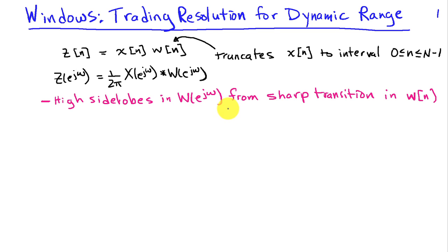That's a consequence of the sharp transition in Wn. If we have a sudden change going from 0 to 1, or from 1 to 0, that generates a lot of high-frequency content, which is represented in the side lobes of the discrete-time Fourier transform.